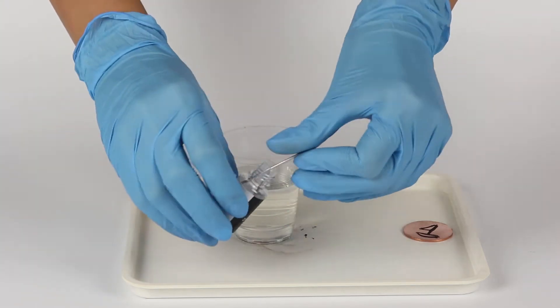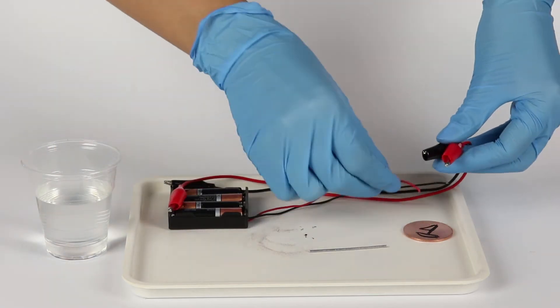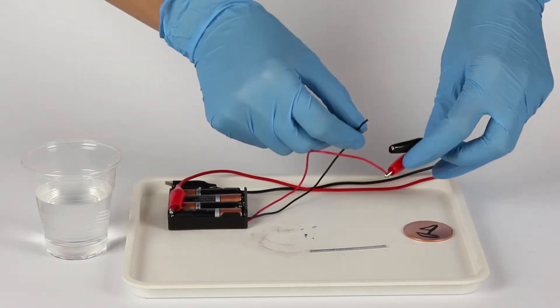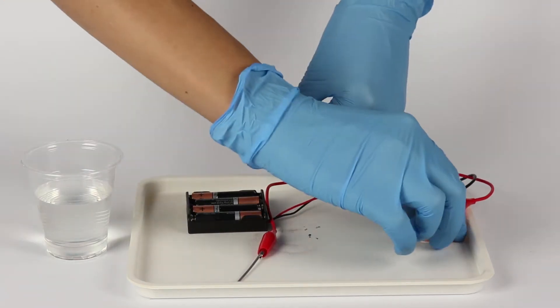Prepare the zinc rod. Take the battery holder with the batteries, and using the crocodile clip wires of the corresponding colors, connect the zinc rod with the red wire, and the copper disc with the black wire.